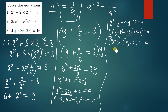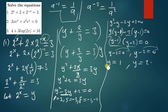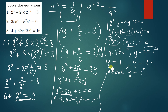We equate each factor to zero: y minus 1 equals zero gives y equals 1, and y minus 2 equals zero gives y equals 2. The equation was asking us to find values of x, not y. Since we let 2 to the power x equal y, we now write: 2 to the power x equals 1, and 2 to the power x equals 2.